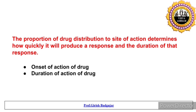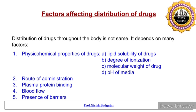The proportion of drug distribution to its site of action determines how quickly it will produce a response and the duration of that response. If a drug reaches the target organ earlier and quicker, it will produce a quick onset of action. More distribution of drug also means more duration of action. So distribution determines two key things: onset of action and duration of action.